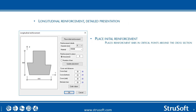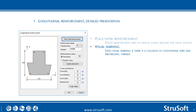Taking a closer look at the longitudinal reinforcement, in this dialogue it is possible to place the initial reinforcement by placing bars in critical points around the cross-section. After the initial placement, it is possible to change the area or the number of bars. If the bars collide with prestressing strands, a visual warning will be given, shown here as red dots.